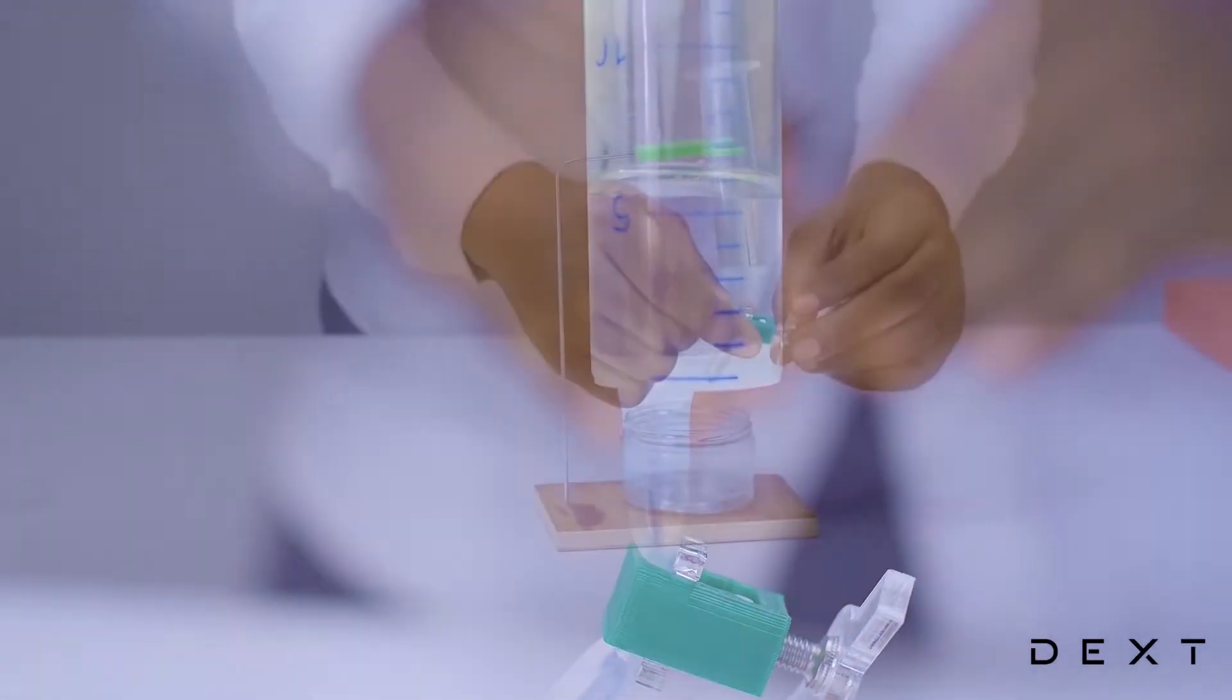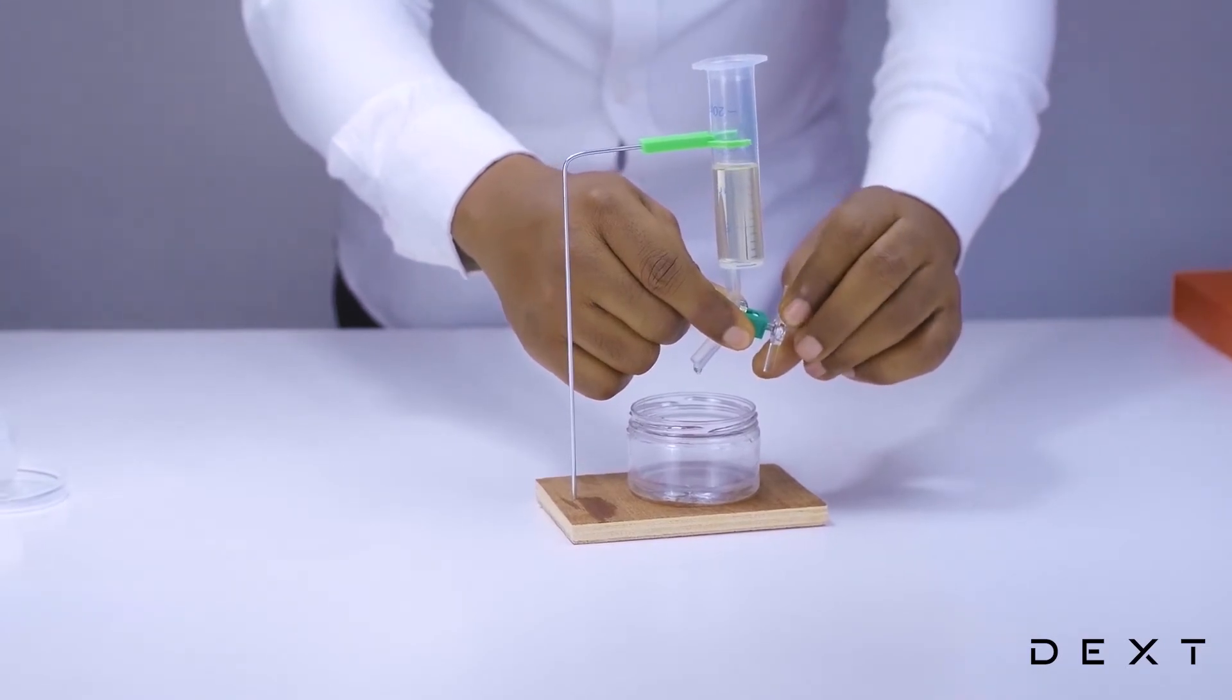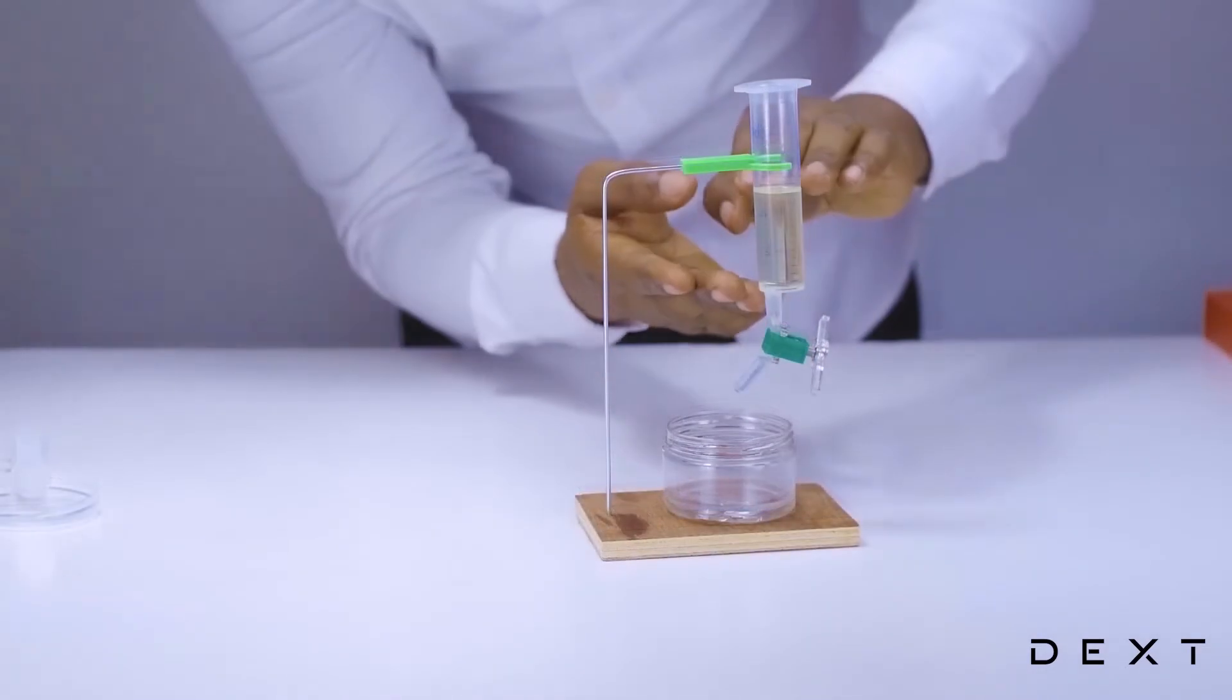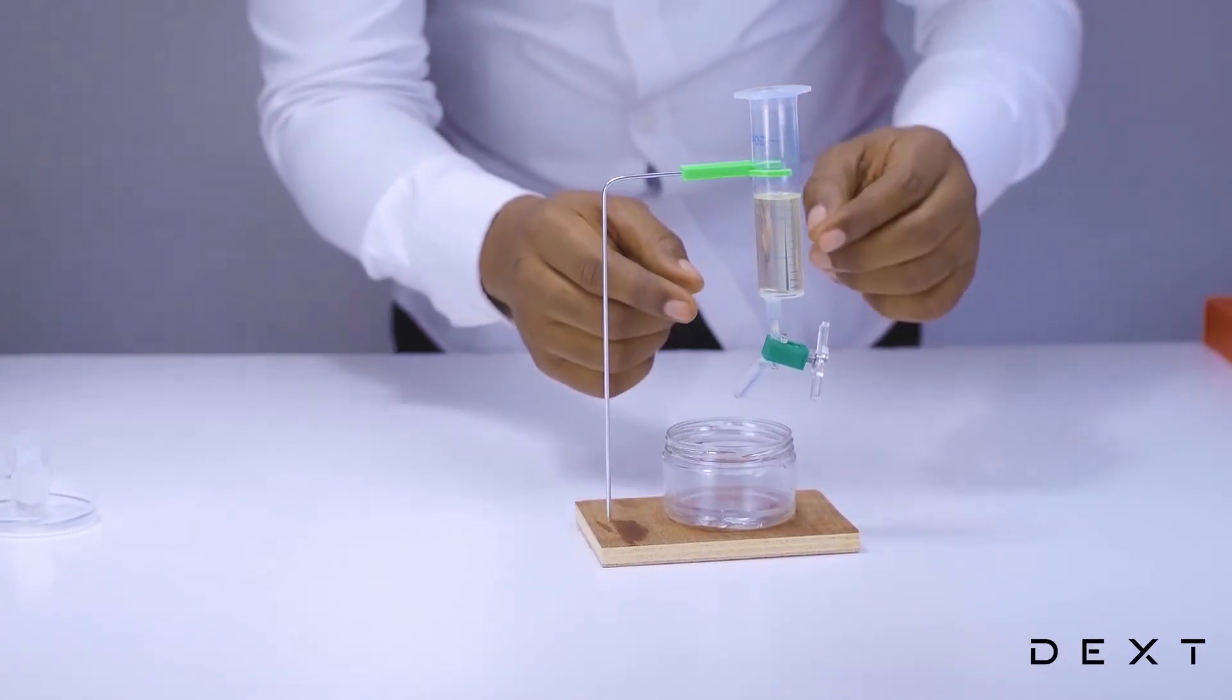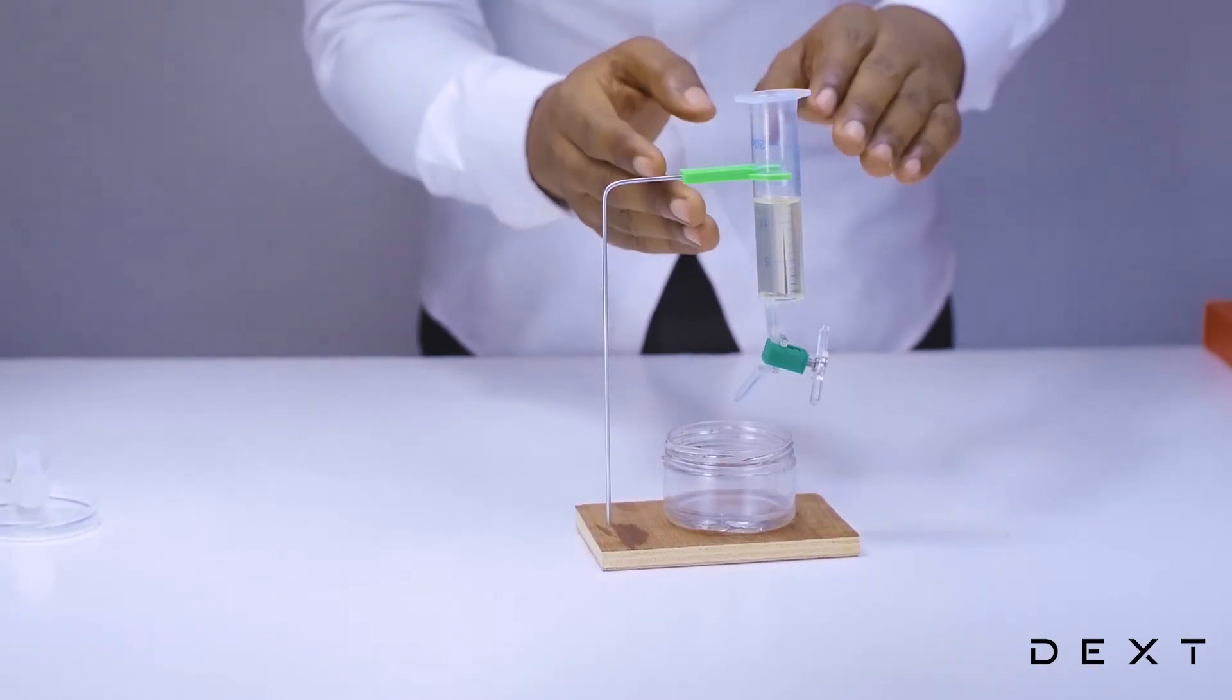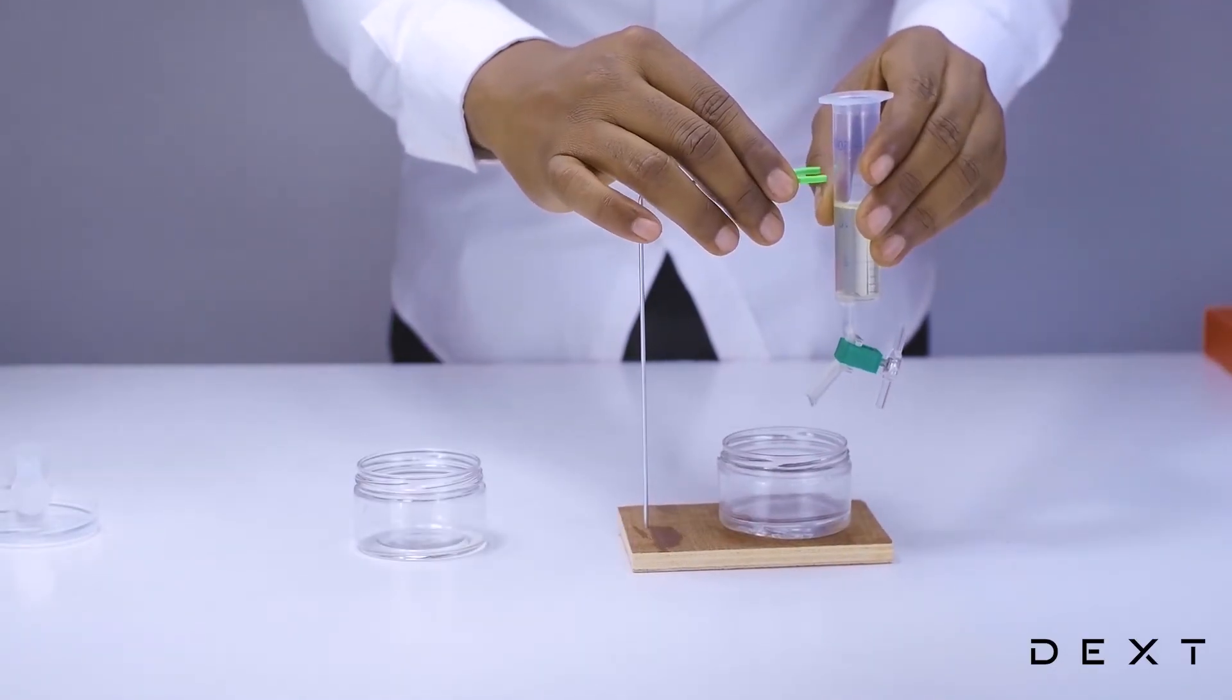Nicely done. Now as soon as the liquid at the base is fully drained, you close your tap. Do not forget not to let any of the oil drain through the tap. Now once you are done, you are going to take the oil and pour it out from the top of your improvised separating funnel.